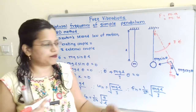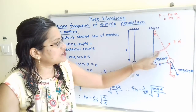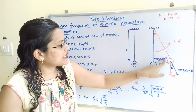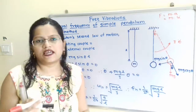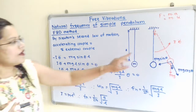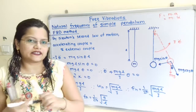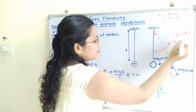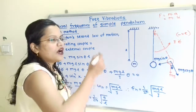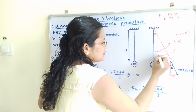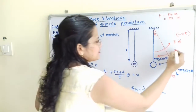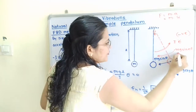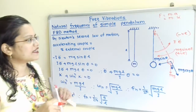According to Newton's second law of motion, the accelerating couple I theta-double-dot equals the summation of external couples. Here, only one component acts in the opposite direction to I theta-double-dot, so we write the couple as MG sin theta multiplied by the distance from the fixed end, L. Considering the sign convention with the external couple in the clockwise direction as positive.